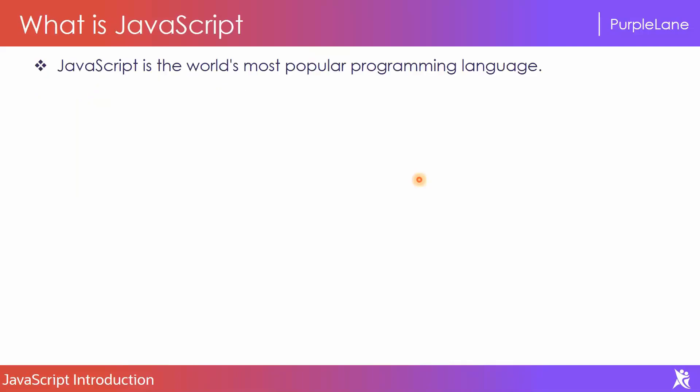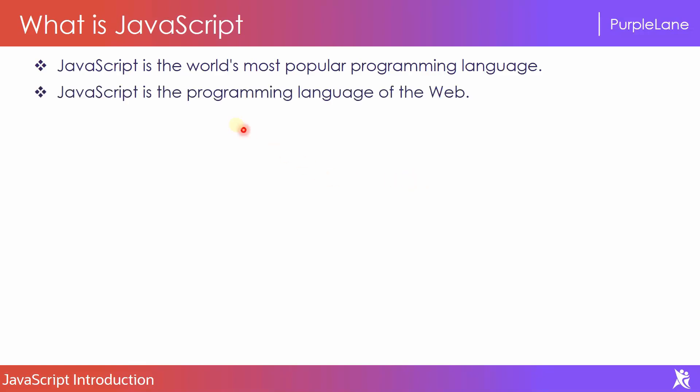A simple definition: JavaScript is the world's most popular programming language. We have C programming, we have Python — those are popular programming languages — and along with them, JavaScript is also one of the most popular. If you ask why JavaScript is popular, it's because JavaScript is the programming language of the web. In web development, JavaScript is used so much; 99% of websites have to use JavaScript.